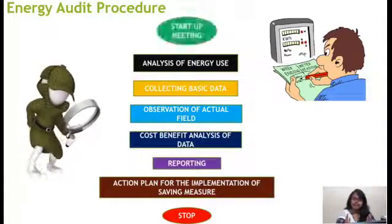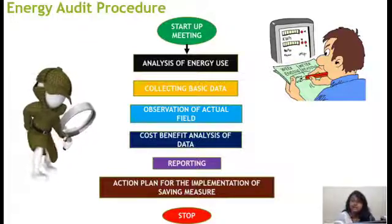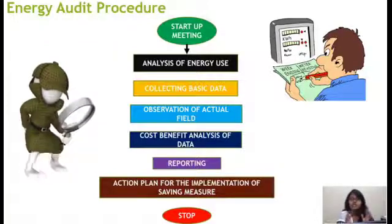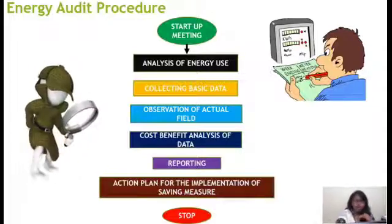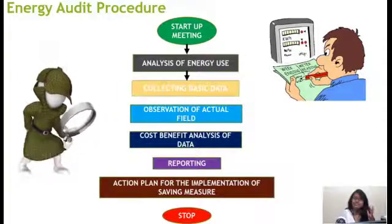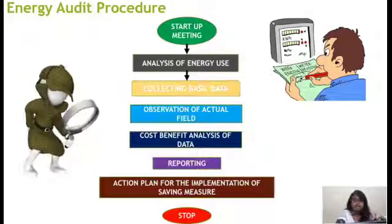The auditor discusses what kind of audit is actually required. Then the auditor performs analysis of energy use — how much energy is utilized in this industry or firm. The past, present historical data will be collected, current data will be collected, and future projections will be collected. So collection of basic data is a must — energy consumption in each zone, boiler efficiency, furnace, refrigeration system — all these things need to be recorded.